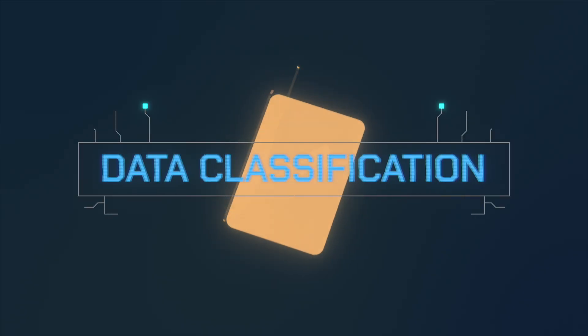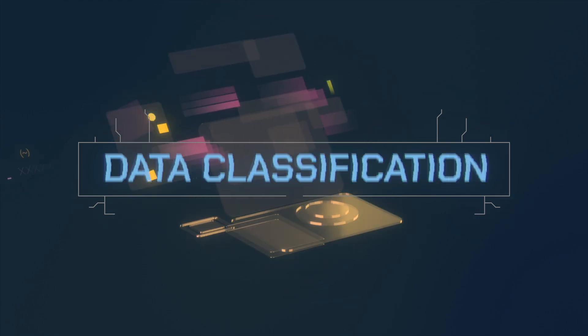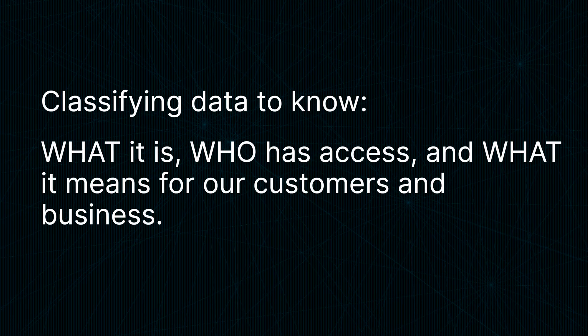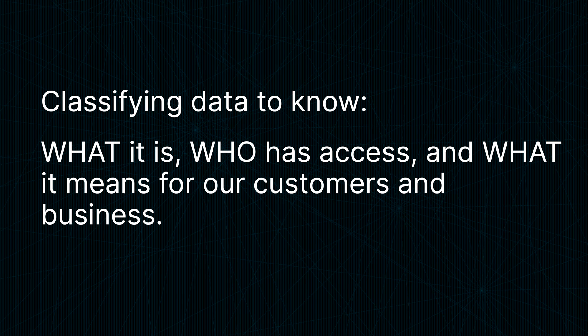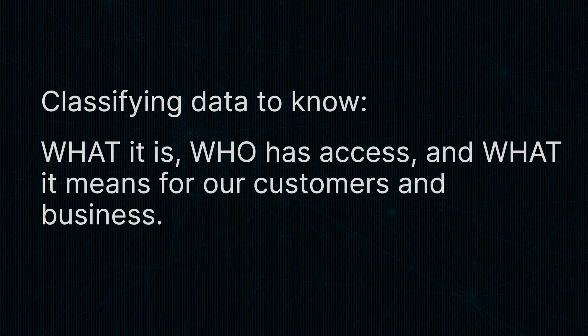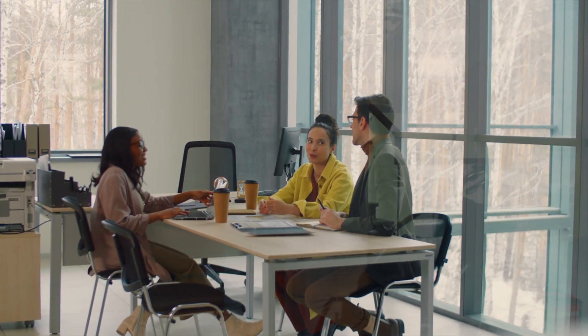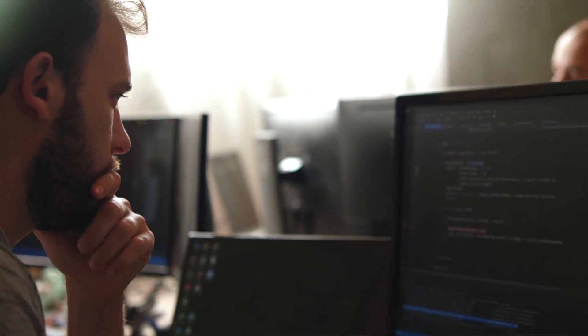Now let's talk about data classification — a relatively new topic. Data is the most critical piece to your infrastructure; it's what we run on. Classifying your data means knowing exactly what it is, who should have access, and what it means for your customers and business. For example, you could have production data leaking into your staging environment because it's not properly classified as customer data. Talk with your leadership and make sure you are classifying your data properly — whether as customer data, staging information, or whatever it may be — as there are all types of data that are important to secure in different ways.